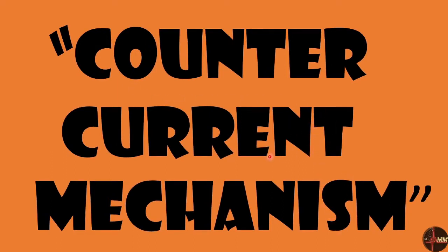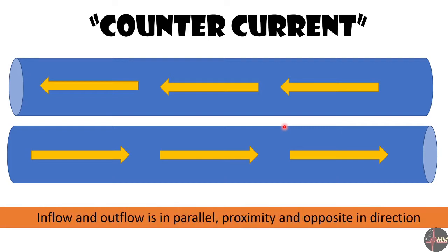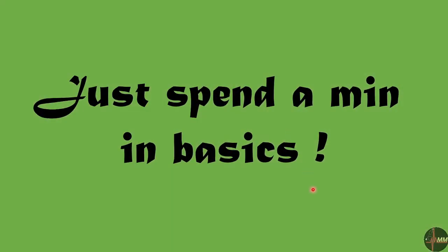What is meant by counter current? The inflow and outflow is parallel, proximate, and opposite in direction — this is called counter current flow. We have counter current flow in the loop of Henle. But before that, you need to spend one minute on some important basics. If you understand this, this session is going to be very easy.